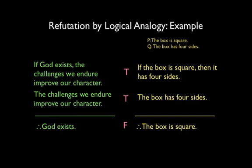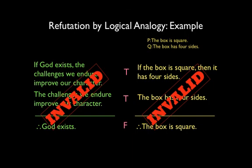Our reasoning about the box seems uncontroversially mistaken. Yet it uses the same pattern of reasoning as the argument about the existence of God. So we can conclude that the reasoning in the argument about the existence of God is mistaken. Both arguments are invalid.